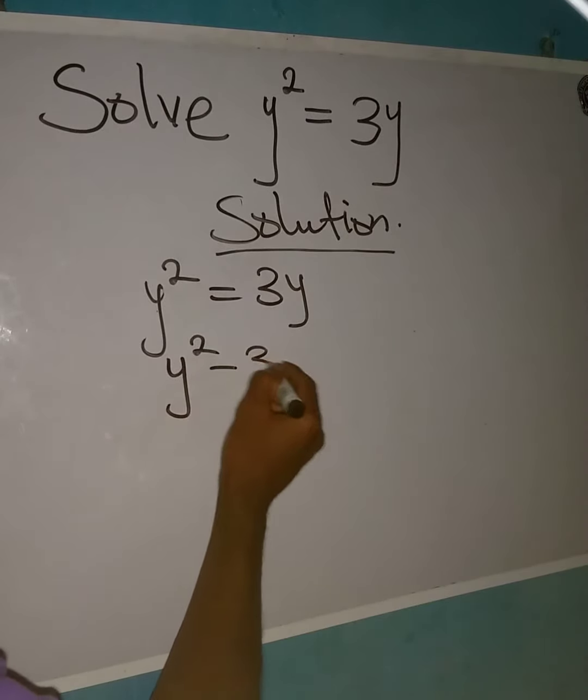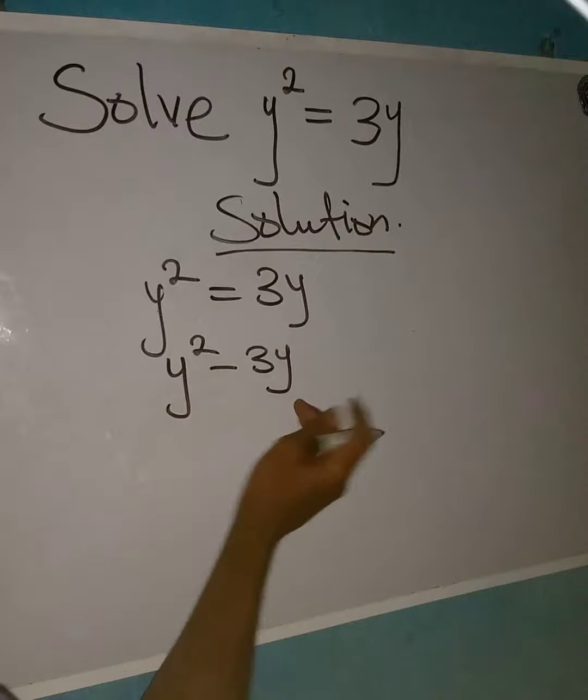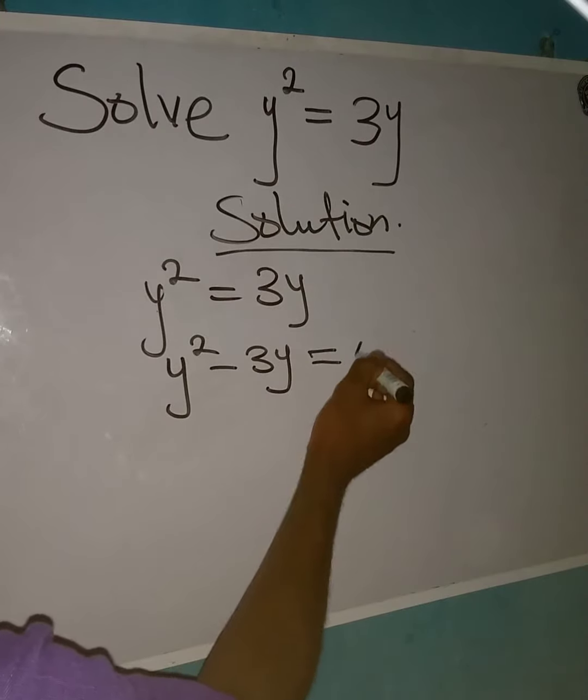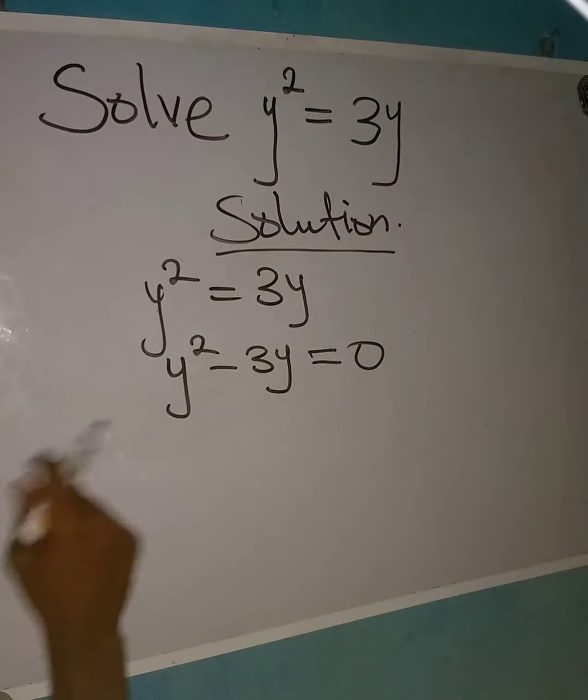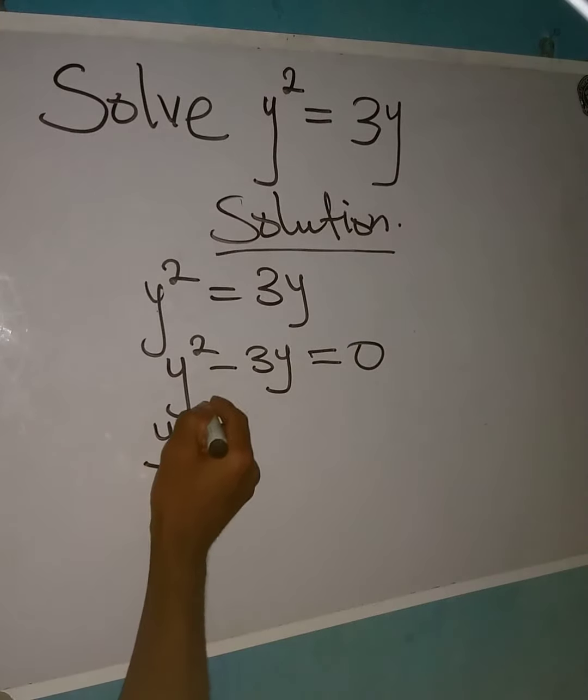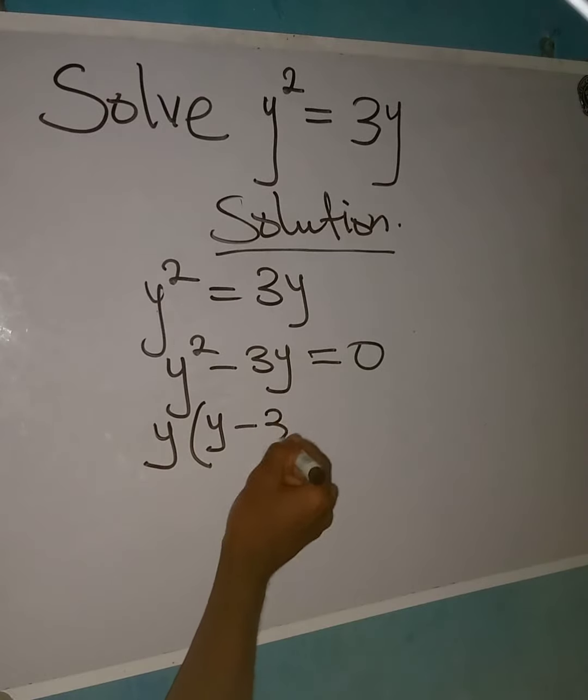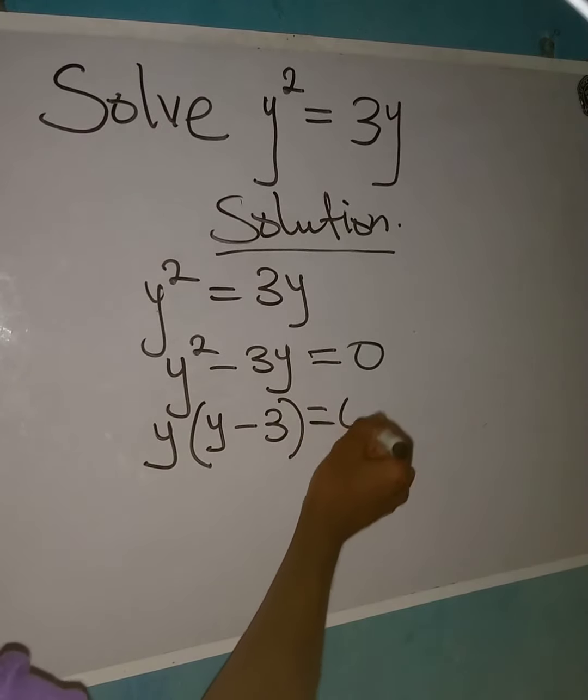Since they're both having y and everything equals to 0, now we can factor out y. So when I factor out y here I'll have y, then minus here I'll have 3. This will be equal to 0.